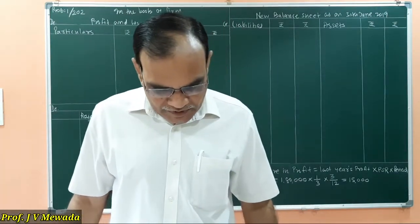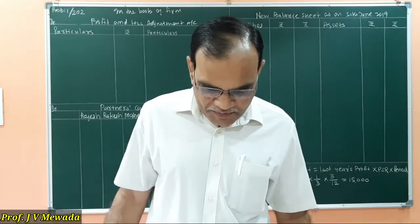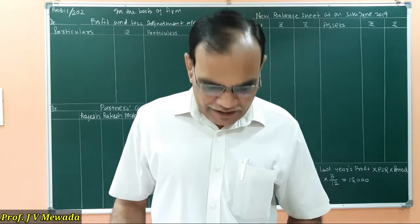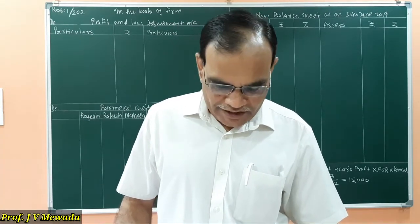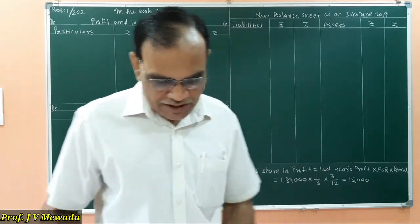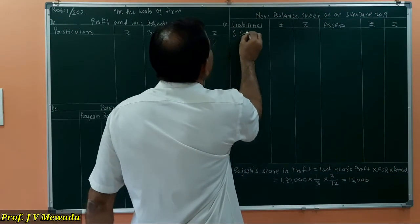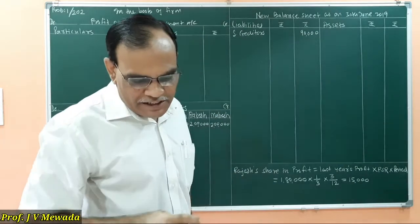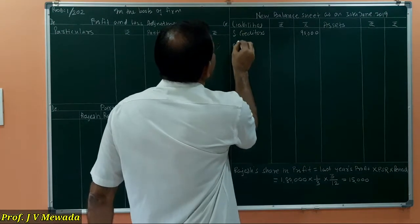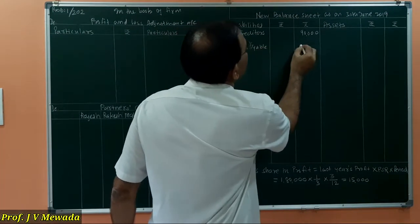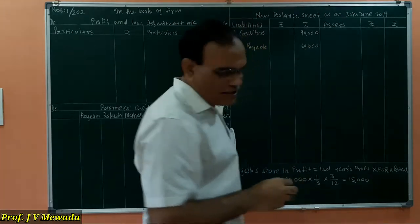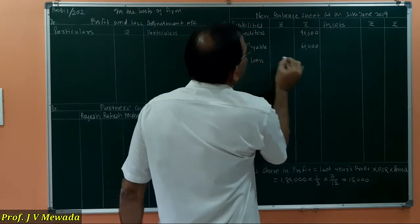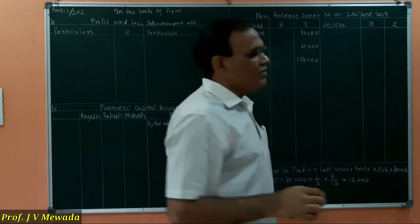We are having creditors, bills payable and loan. Nothing is given about adjustments for creditors, bills payable and bank loan, so we write these directly in the outer column of the balance sheet. Sundry creditors: 90,000 — outer column. Bills payable: 60,000 — outer column. Bank loan: 1,50,000 — outer column. So our liability side is over.